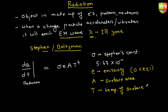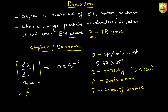Now, what is the unit of Stefan's constant? dQ/dt is joule per second, which is also equal to the power unit — watts. So the unit of sigma works out to be watts per meter squared per kelvin to the power four — W/m²K⁴. That is how you derive it.